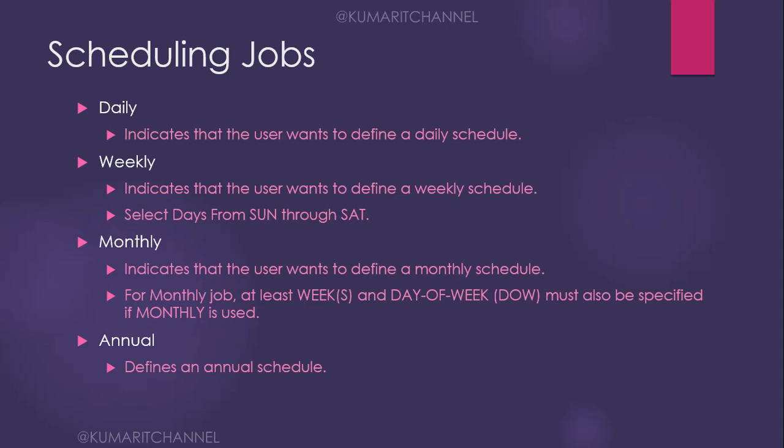To understand the scale: daily might be around 1 million transactions, weekly around 5 million, monthly around 20 million, and annually around 240 million records. So if a daily job runs for one minute, a weekly job might take five minutes, monthly about 20 minutes, and annually you can calculate proportionally. These are the scheduling job categories we define in CA7.